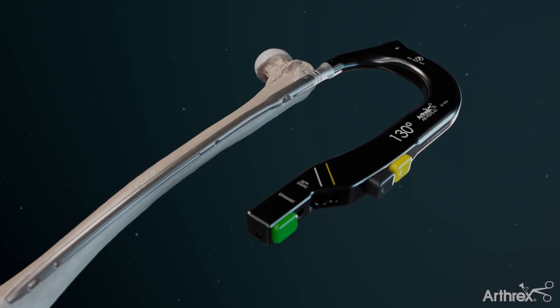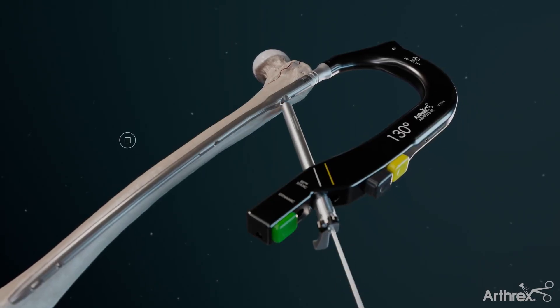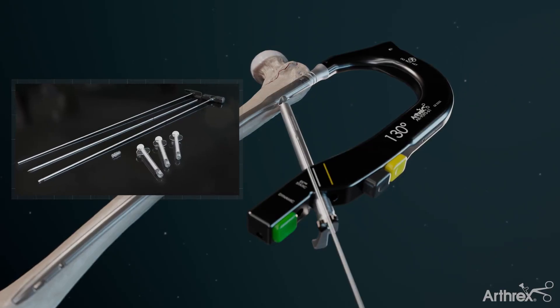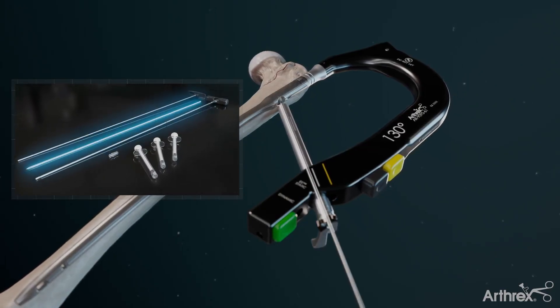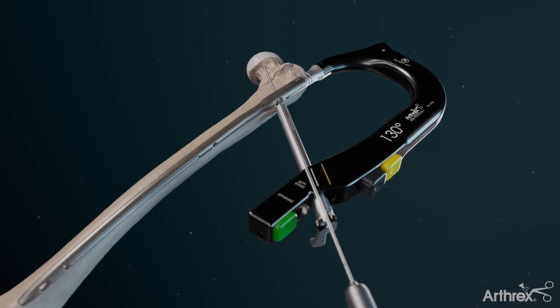Before the case begins, it's important to determine if augmentation is desired. If so, the 3.2mm guide pin from the augmentation kit is used during the reaming step.